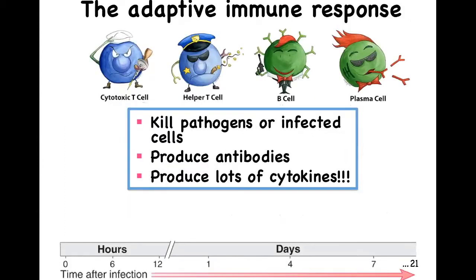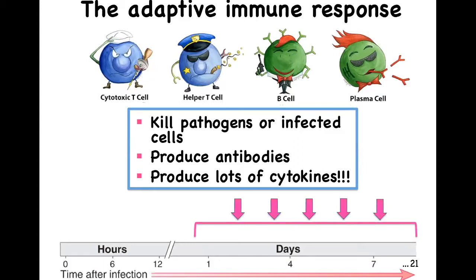Soon after the innate immunity is activated, the adaptive immune response kicks in and it can last up to 21 days and even more during certain infections. This response is characterized by the function of some leukocytes known as lymphocytes. There are two main types of lymphocytes: T cells, which can be either helper or cytotoxic T cells, and B cells or plasma cells, which are the ones that produce antibodies. Similar to leukocytes from the innate immunity, lymphocytes also produce many different types of cytokines.